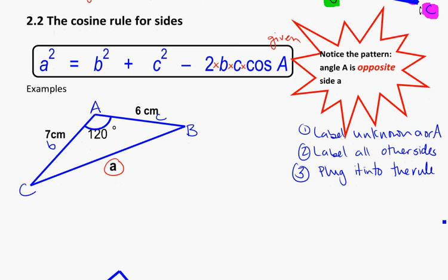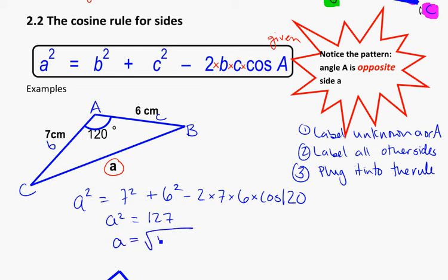So that's our labeling, and now we'll actually plug it into the rule. So our rule, a squared equals b squared plus c squared minus 2 times b times c times cosine of A. So what do we have? We don't know what a is, so we're going to leave it as a squared is equal to. B squared is 7 squared. C squared is going to be 6 squared. Minus 2 times 7 times 6 times cosine of the angle A, which was 120. So if we plug all of that carefully into our calculator, we're going to get a squared is equal to 127. And to find out what a is, the way you undo a squared is to take the square root. So a is going to be equal to the square root of 127. And this is equal to 11.3 centimeters.